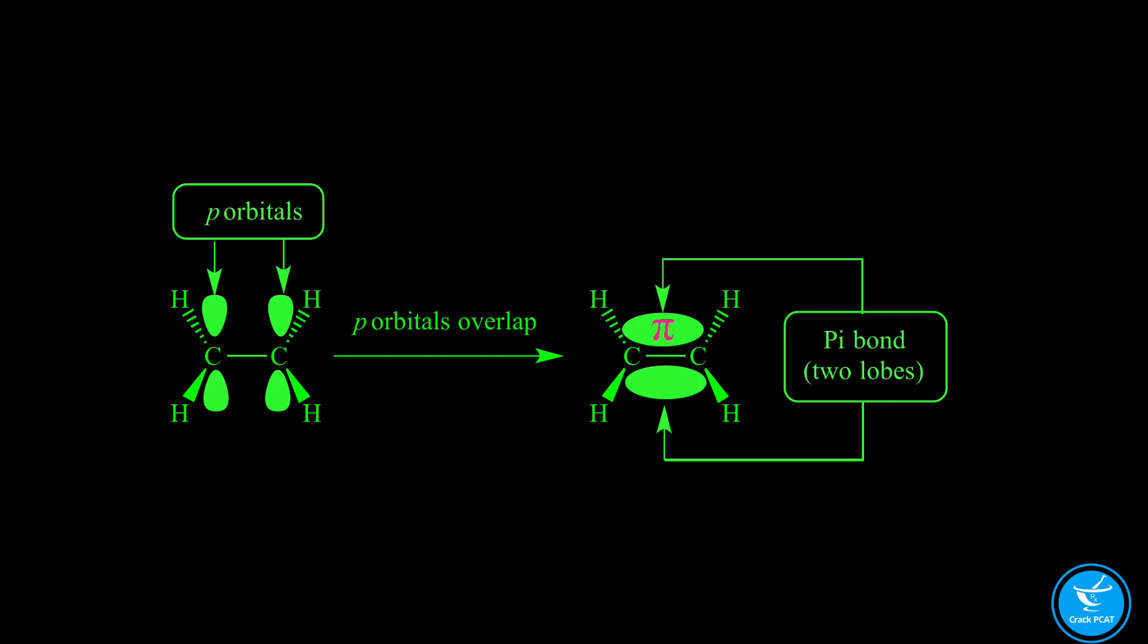Pi bonds are generally weaker than sigma bonds because they don't have the same nuclear overlap that sigma bonds do. However, two atoms that have the combination of pi and sigma bond is going to be stronger than either bond by itself.